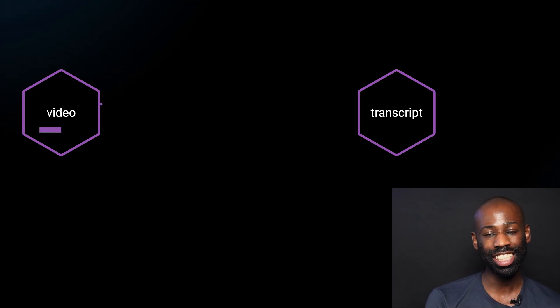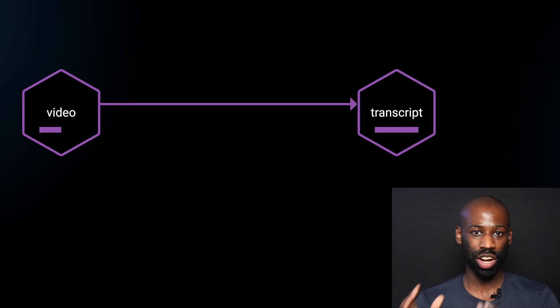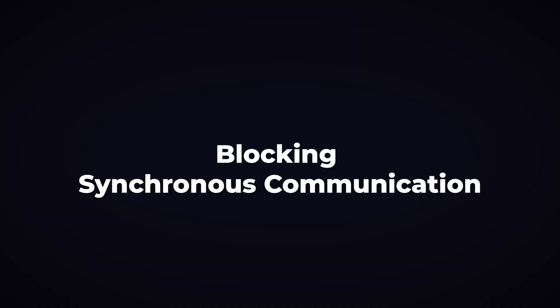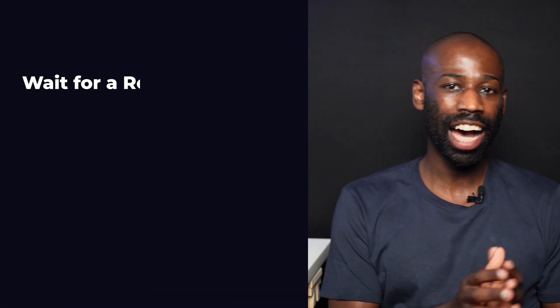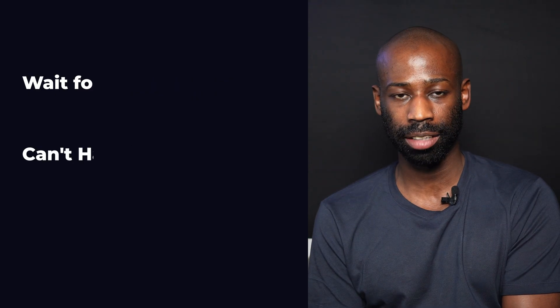Let's take a video service that sends a request to the IP address of a running instance of the TransCube service and waits for a response. This type of communication is called blocking synchronous communication, and there is a major downside to this type of communication. When the video service sends a request to the TransCube service, it has to wait for a response and it can't handle any other request until it gets a response back.